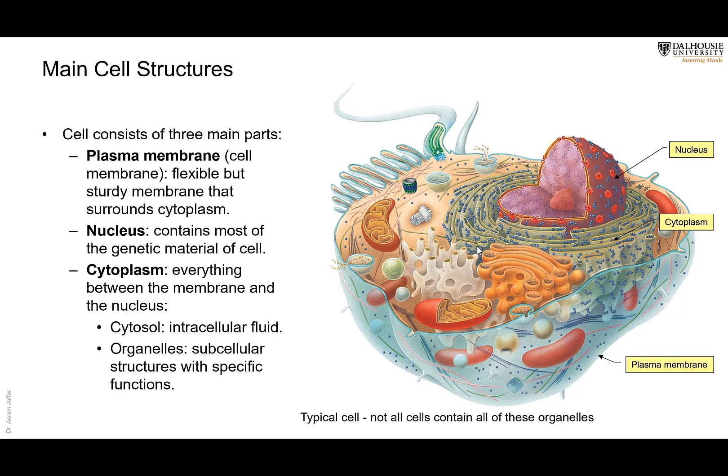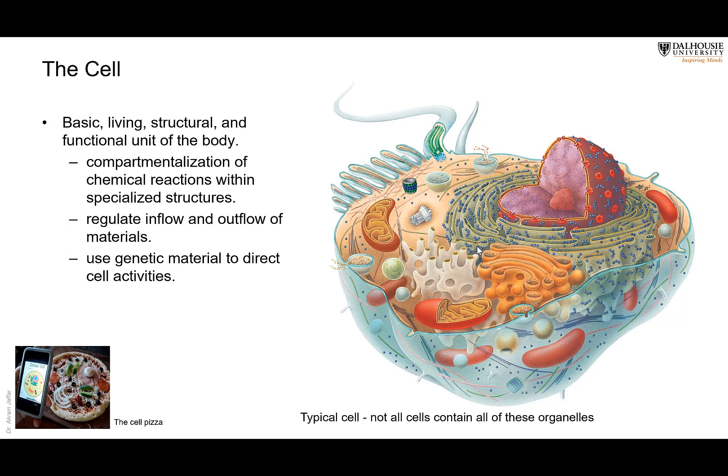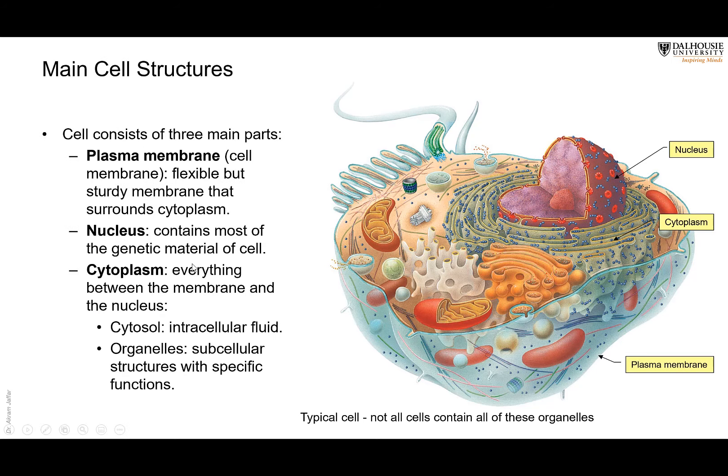Inside the cell there is the cytoplasm, which contains subcellular structures — the organelles, which will be the subject of next lecture. This lecture will concentrate on the cell membrane. The organelles float in a watery sap within the cytoplasm called the cytosol. There is also the nucleus — some textbooks consider it part of the organelles, some do not. It contains most but not all of the genetic material, and we will see why next time when we study the organelles.